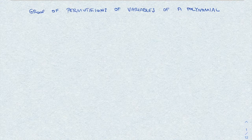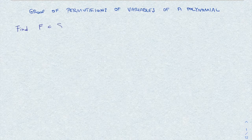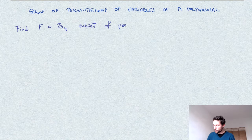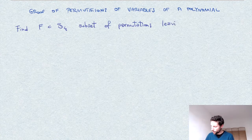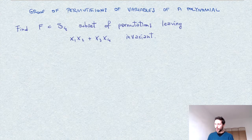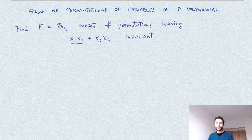Here is the exercise. We want to find the subset F of permutations over four letters — the subset of such permutations that leave some expression invariant. The expression is the following. The additive sum is to be considered commutative, and also the product of two variables.